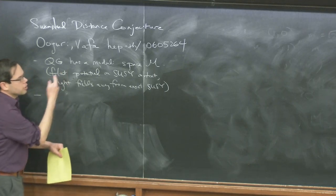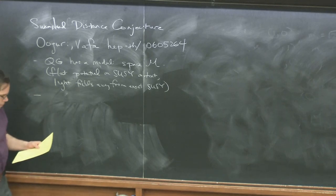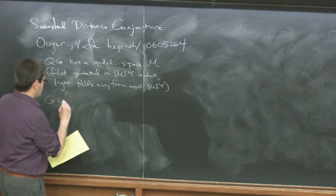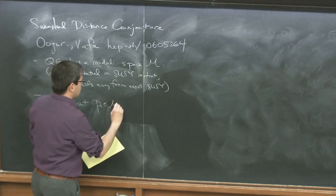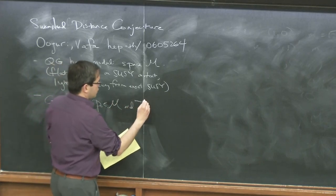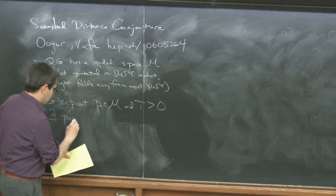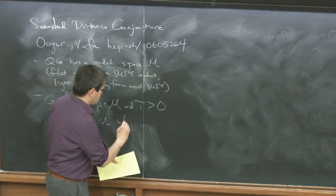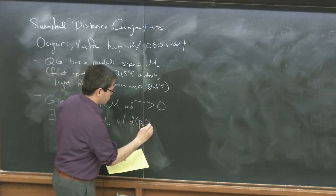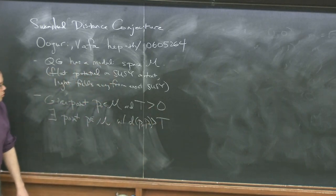Their first conjecture about moduli spaces is that if I give you a moduli space, there exist points that are infinitely far away. Given a point in the moduli space and some positive number, you can find some other point in the moduli space whose distance is bigger than that number — so moduli spaces allow you to go infinitely far away.